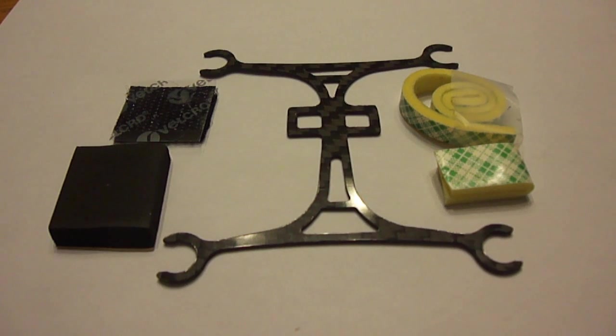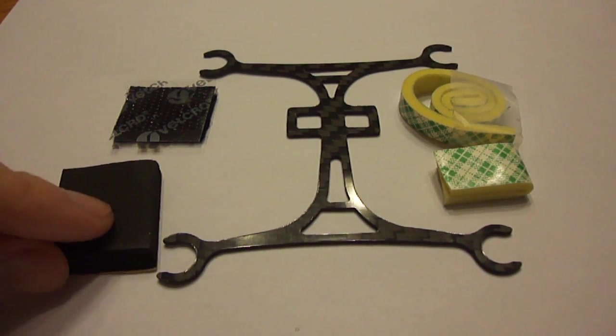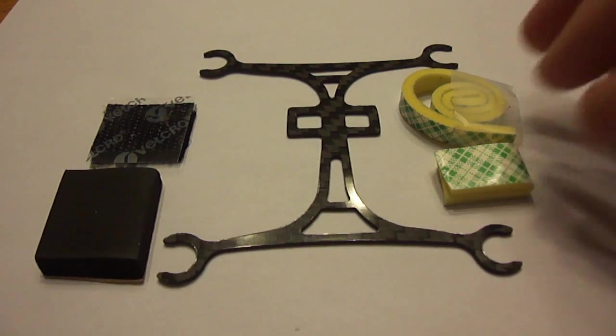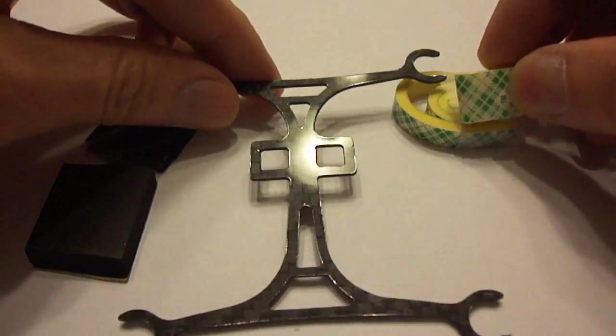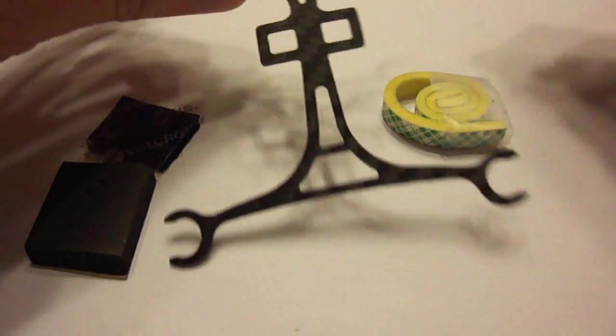So this is the Phoenix Flight Gear Carbon Fiber 110mm Frame Kit for the NanoQX Foam, with Velcro for the battery and these foamies that get wrapped around the motor and then put into the thing there.